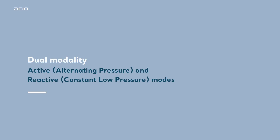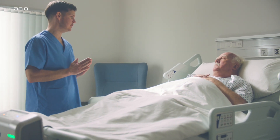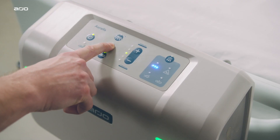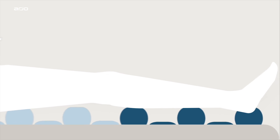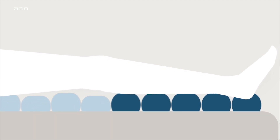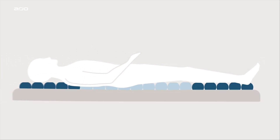Dual modality: active alternating pressure and reactive constant low pressure modes. In active alternating mode, the system's default setting, the alternate inflation and deflation of the air cells periodically cycle beneath the patient in a one-in-two cycle every 10 minutes. This reduces tissue contact with the support surface to a level that is as low as practically achievable. Halfway through the cycle, the inflated cells deflate and the deflated cells inflate in a period known as crossover, which allows for stability of the patient to be maintained in all stages of the alternating cycle.